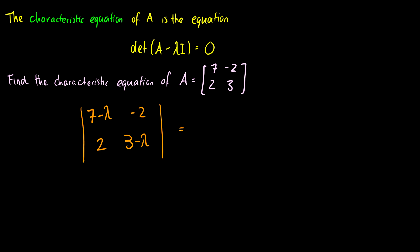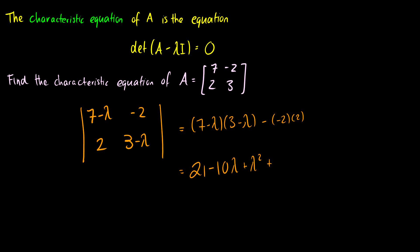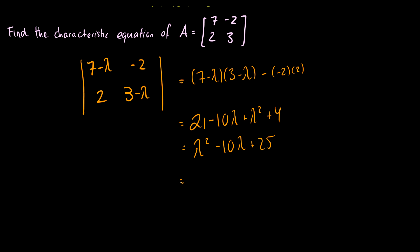We know the determinant is just AD minus BC. So we get (7 minus lambda)(3 minus lambda) minus (negative 2)(2). Expanding this out gives 21 minus 10 lambda plus lambda squared, and subtracting negative 4 means we add 4. Rearranging, we get lambda squared minus 10 lambda plus 25, which factors as (lambda minus 5) squared. That's our characteristic equation.